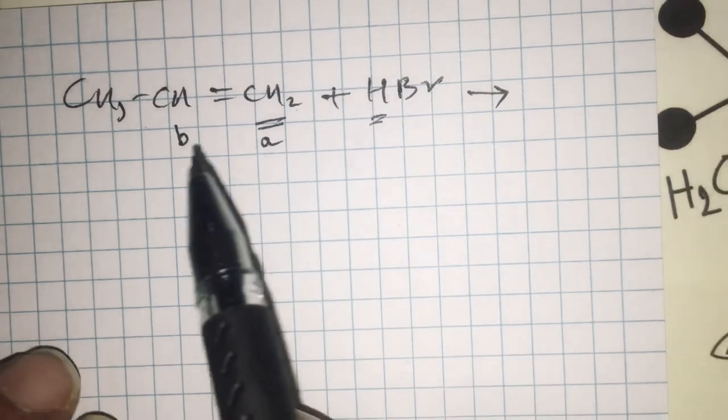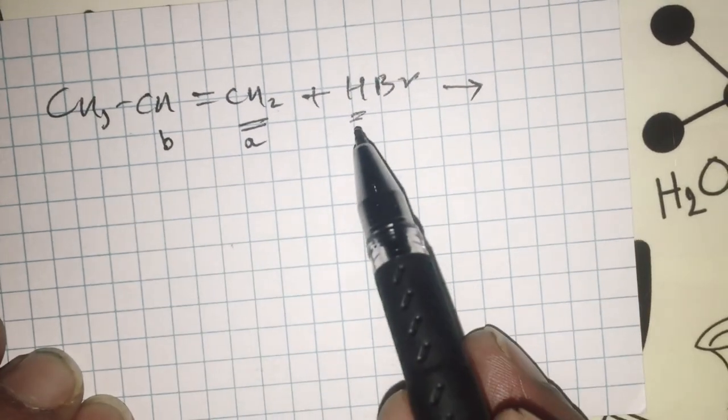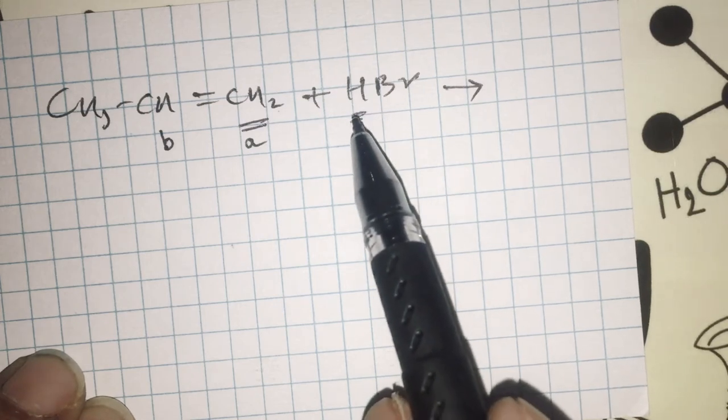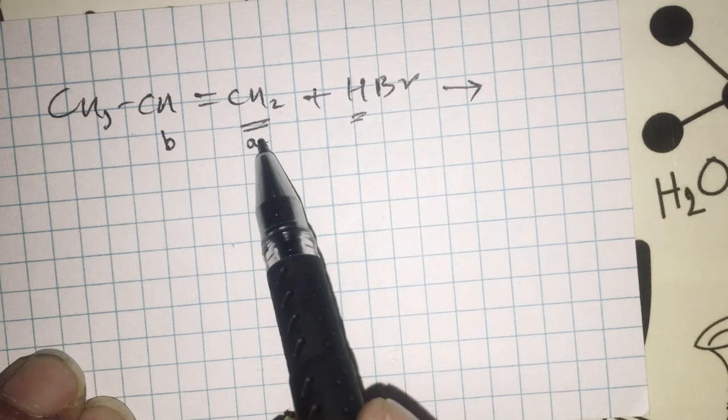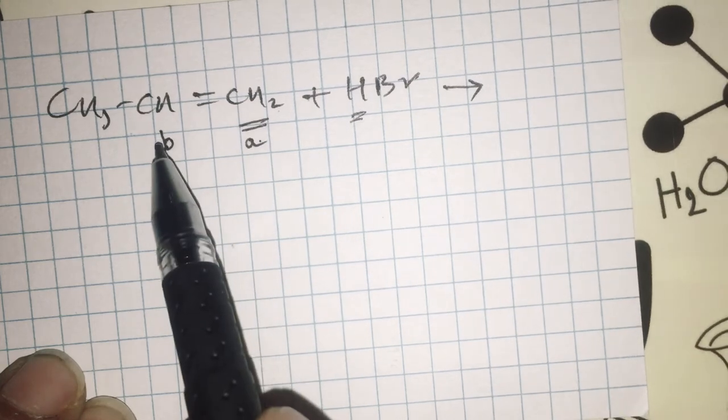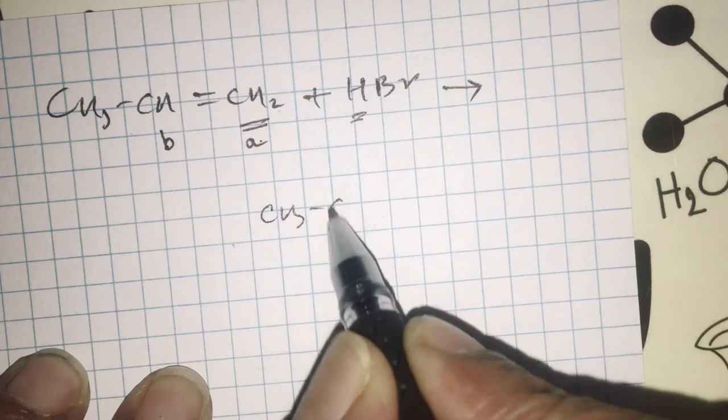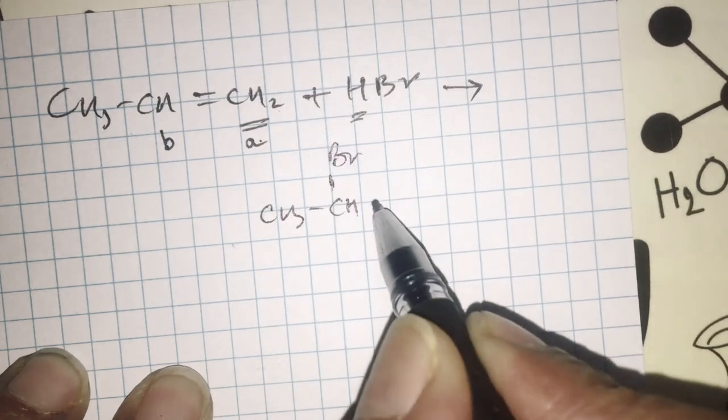We have seen when an unsymmetric alkene like propene is added to HX, maybe HCl, HBr or HI, the hydrogen in this addition reaction goes to the carbon which has more hydrogens. Therefore, by and large, the major product appears to be 2-bromopropane.